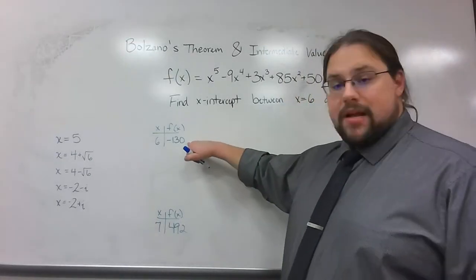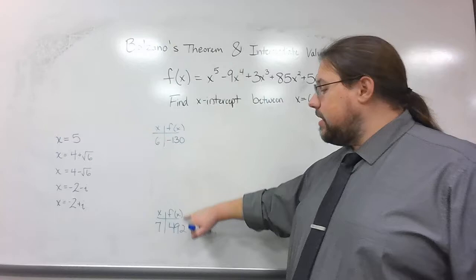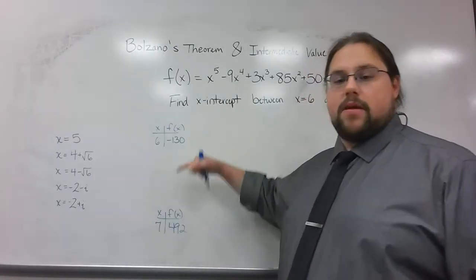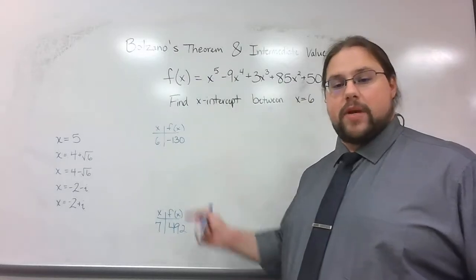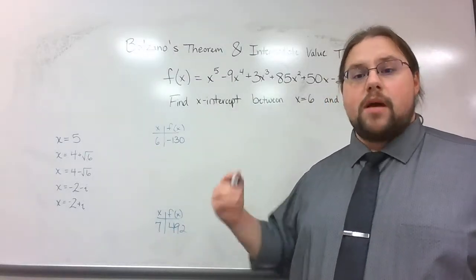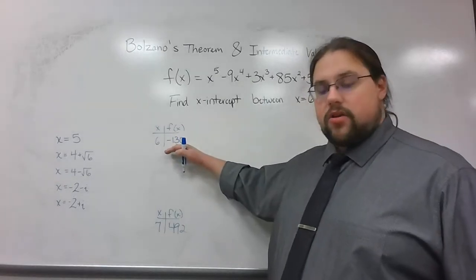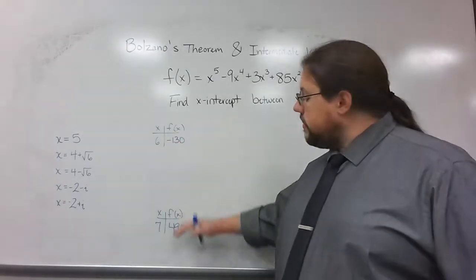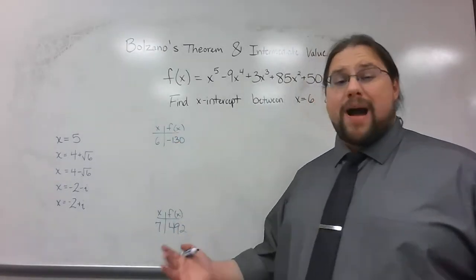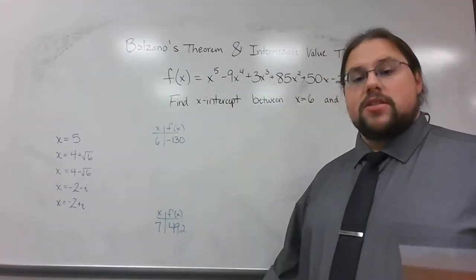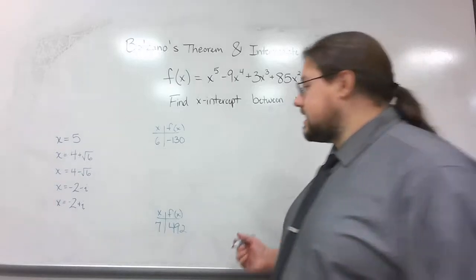So let me point out again, when I plugged in 6, I got negative 130. When I plugged in 7, I got positive 492. Since I got a positive number and a negative number, I know that 0 has to be somewhere in between them. Now, the question is, what number do we try next? Well, since this negative 130 is closer to 0 than 492, I'm probably going to try a number closer to 6 than to 7. So what I tried first was I tried 6.4.